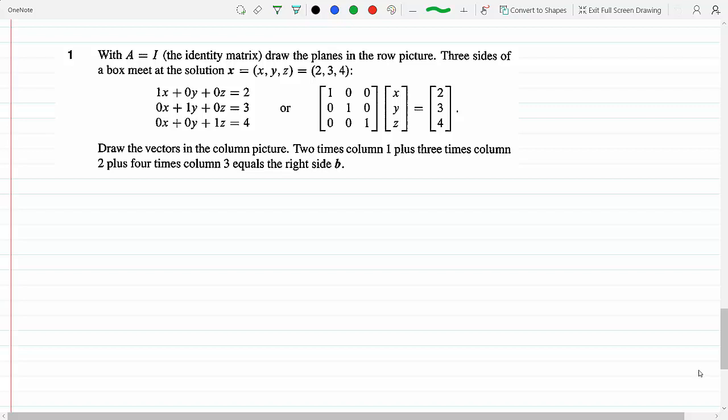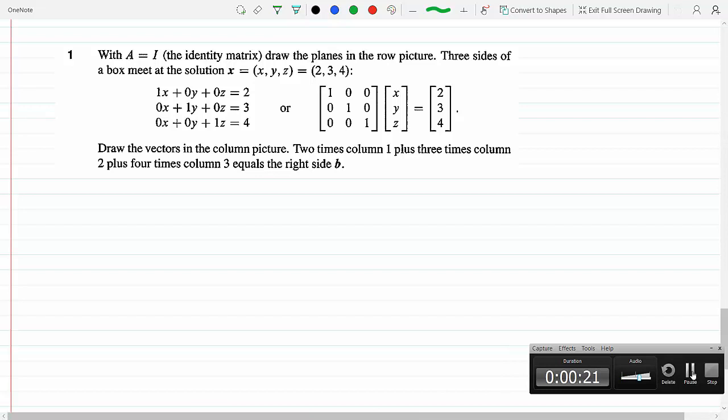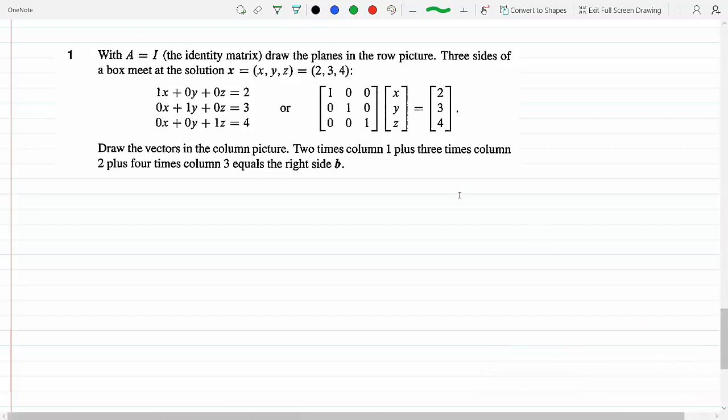We have a matrix and the question is asking us to draw the planes in the row picture. We also have to draw the vectors in the column picture. That's questions one and two.